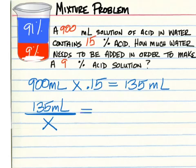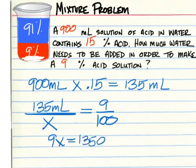We need the acid to be 9% of that contents. 9 over 100 is 9%. When you set up this proportion, you cross multiply to get 9x equals 13,500. Divide 13,500 by 9, and that will give you 1,500.